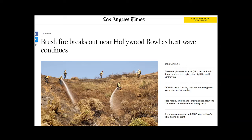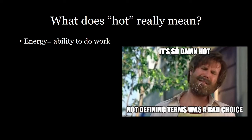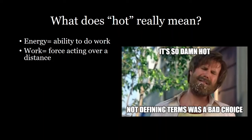We'll talk about it throughout the course — how the distribution of energy affects how different landforms can form. So, importantly, we should start by defining some terms. What do we mean by hot and heat and energy? Energy is the ability to do work, and work is just a force acting over a distance. For example, if you had a box and you pushed it over some distance, you're applying work to that box, and your ability to do that is energy.